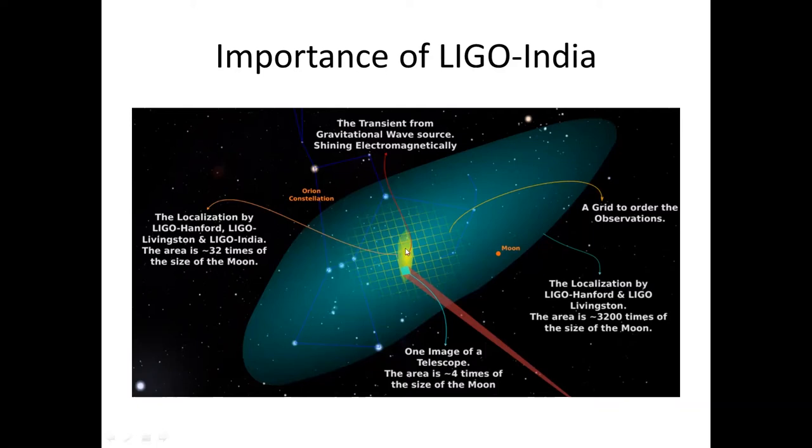Thus LIGO India will help in decreasing the area of localization 100 times because as you can see here, the small yellow patch is just 32 times the size of the moon. And that is why LIGO India is very important in enhancing our ongoing efforts to know more about gravitational waves.